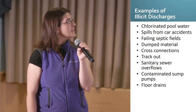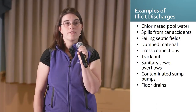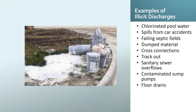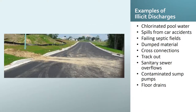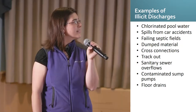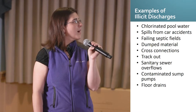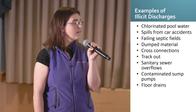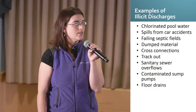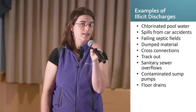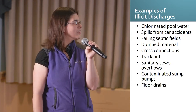Here are just a few examples of illicit discharges: chlorinated pool water, spills from car accidents, failing septic systems, dumped material, cross connections, track-out from construction sites — sometimes an overlooked illicit discharge, but that sediment is considered to be non-stormwater, so it would be an illicit discharge. Sanitary sewer overflows are a special case of illicit discharges. Contaminated sump pumps and floor drains resulting in non-stormwater discharges are also illicit discharges.